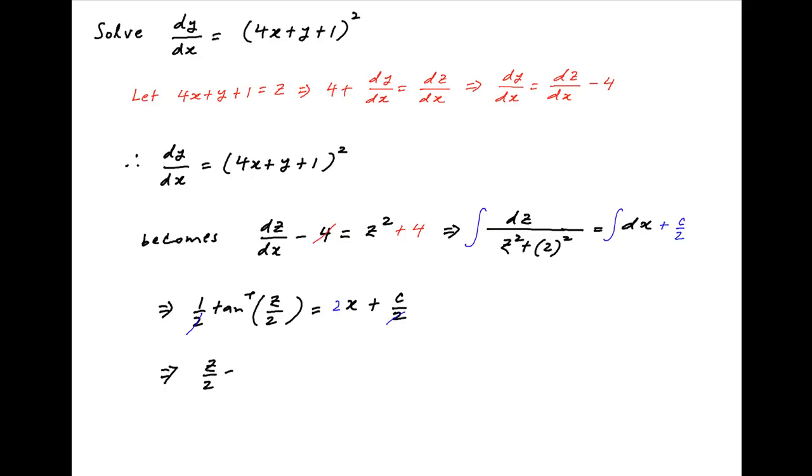We get z upon 2 equals tan of 2x plus c. Replacing z with 4x plus y plus 1, this can be written as 4x plus y plus 1 equals 2 times tan of 2x plus c, which is the required answer.